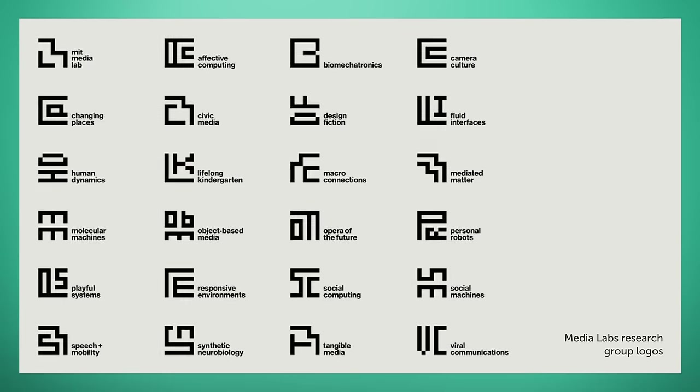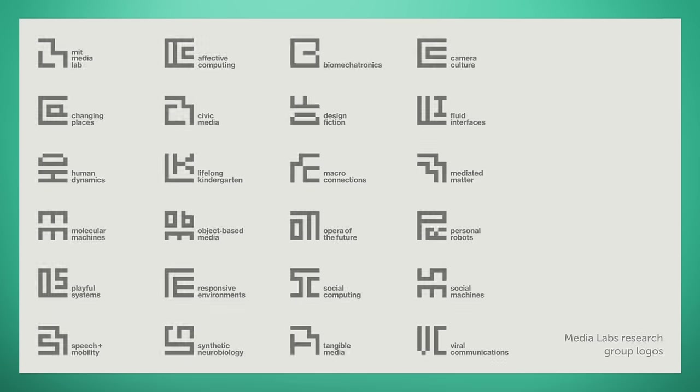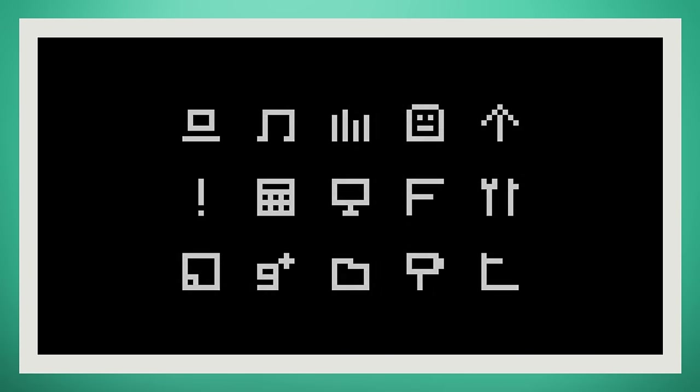The MIT Media Lab logo is actually part of a set of 24 different logos. The MIT Media Lab is an umbrella organisation which spreads over 24 different departments. Michael Beirut established a 7x7 grid system which he used to create acronym type hieroglyphs for each department. This grid system delivers interesting combinations with a distinctive visual language, and is also used to create a complete typeface and an icon set.